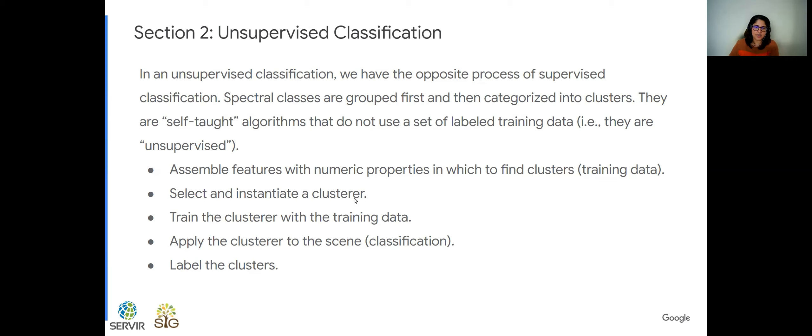Then we select and instantiate a clusterer. Instead of using the word classifier here, we're going to use the word clusterer for unsupervised classification. Now we're going to move into the ee.clusterer object, which is the language that Earth Engine uses. Then we train this clusterer with the training data that we have generated here, which is not labeled by classes. Then we apply the clusterer to the scene, which is like classifying the image. And after that, then we can label the clusters and define which classes we're drawing from this.